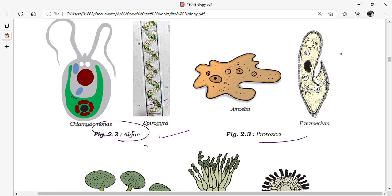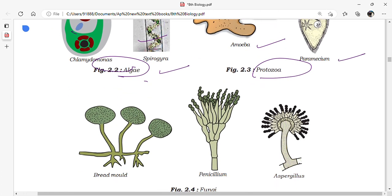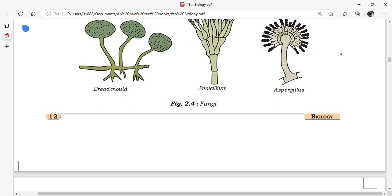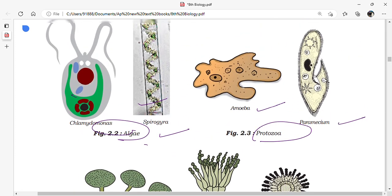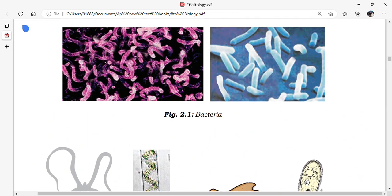Protozoa: Amoeba and Paramecium are examples of protozoa. Fungi: Bread mold, Penicillium, and Aspergillus are examples of fungi. All these are examples of microorganisms.